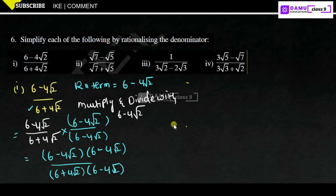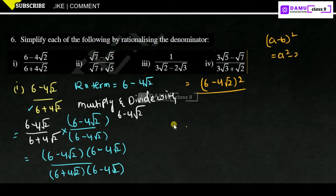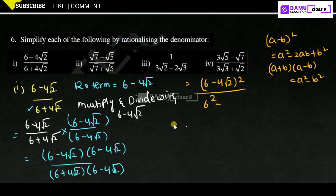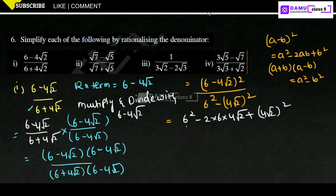So we have (6 minus 4 root 2) whole square in the numerator. The formula for (a minus b) whole square is a squared minus 2ab plus b squared. For the denominator, the formula for (a plus b)(a minus b) is a squared minus b squared, which gives us 6 squared minus (4 root 2) whole square.